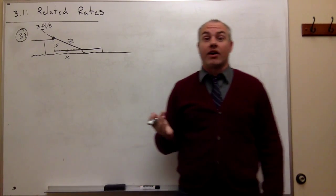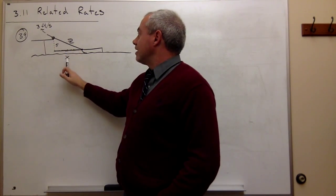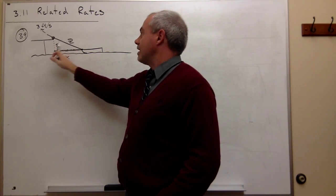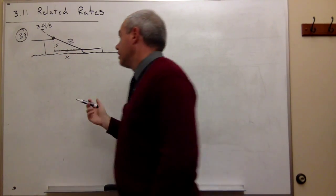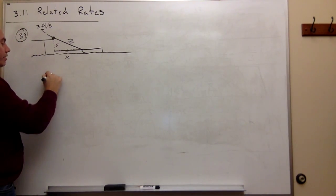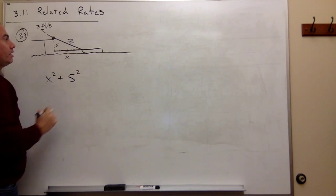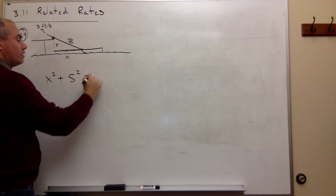The 5 feet is never changing, so I don't need to assign it any sort of a variable. Now I can set up an equation that relates this x, this z, and this 5 together. I can say by the Pythagorean theorem that x² + 5² = z².